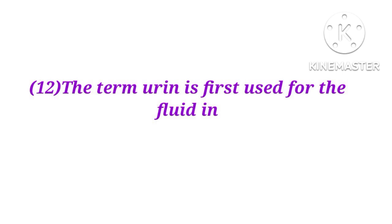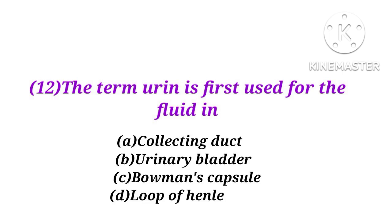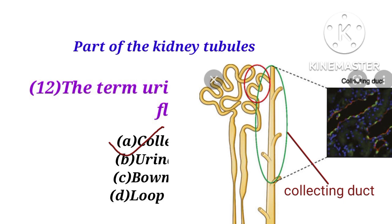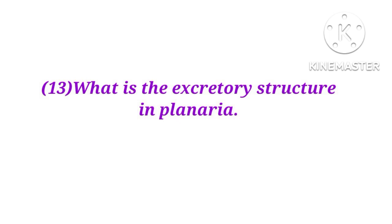Number 12. The term 'urine' is first used for the fluid in the collecting duct, urinary bladder, Bowman's capsule, or loop of Henle? The answer is A. The collecting duct is the part of the kidney tubules where the term urine is first used for the fluid.